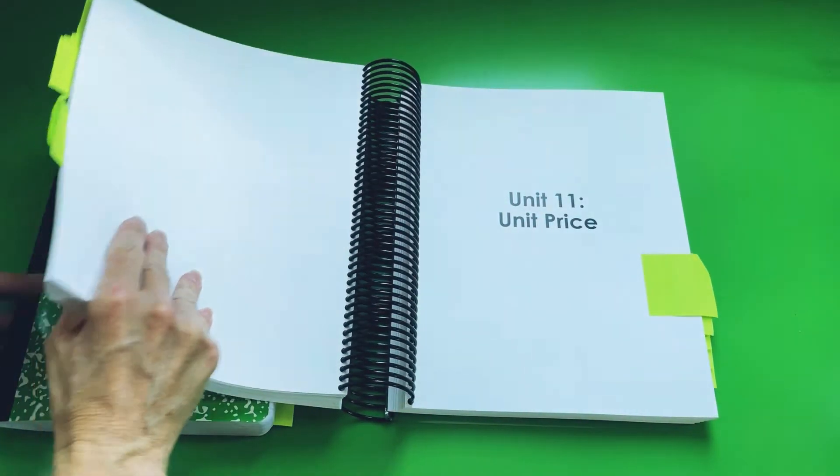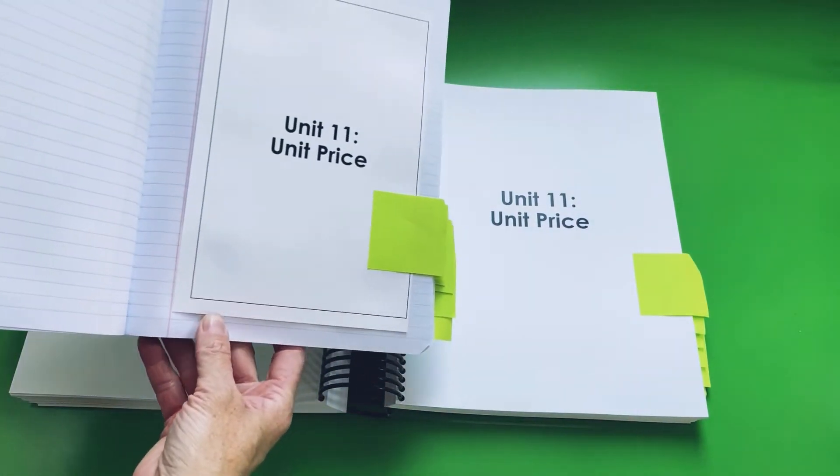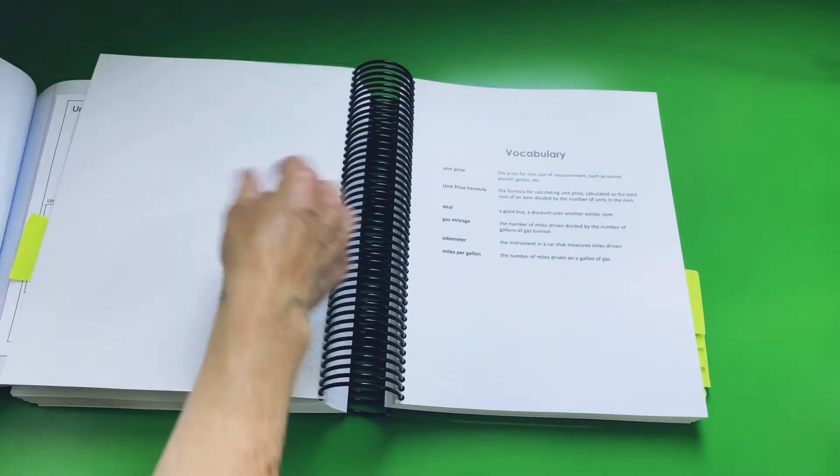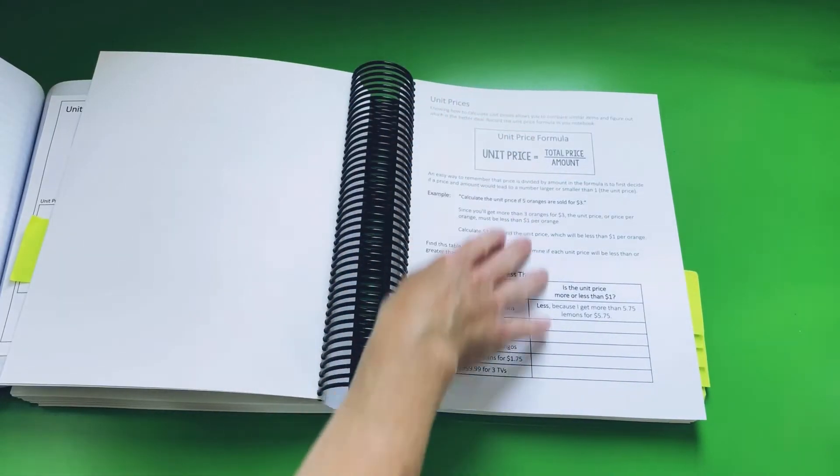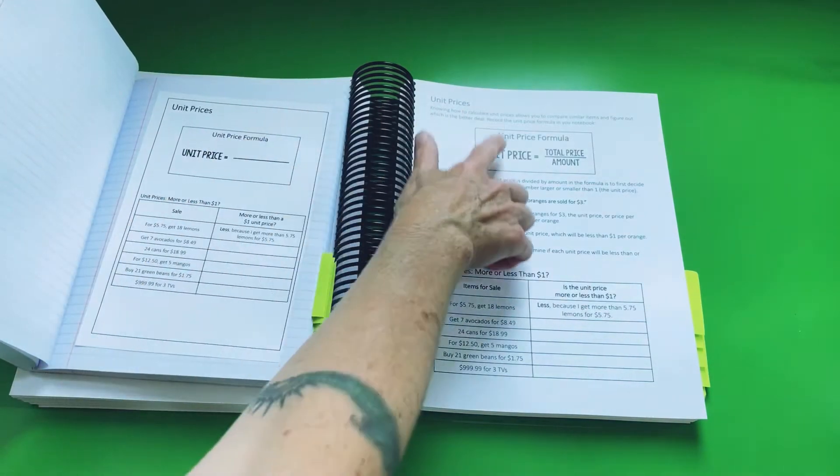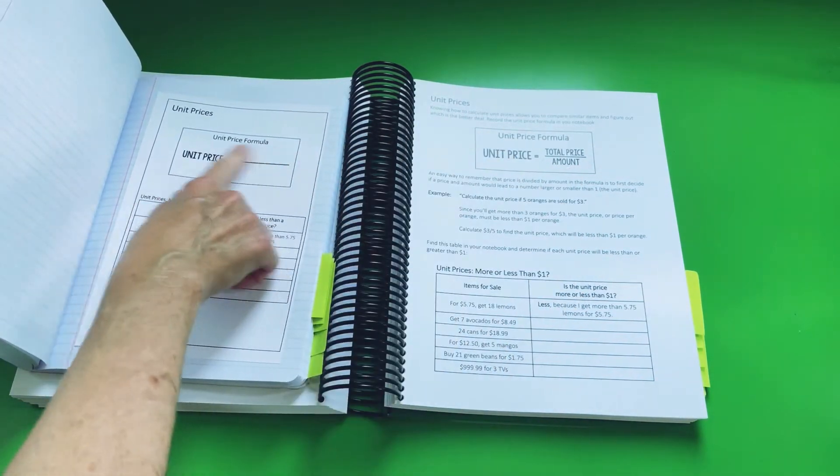And let me just show you how the notebook comes into things. So here's our cover page and the students will have their own little cover page. Here they have some vocabulary and then there'll be some examples. Students can transfer them into their notebook. So here is the unit price formula that they can transfer into their notebook.